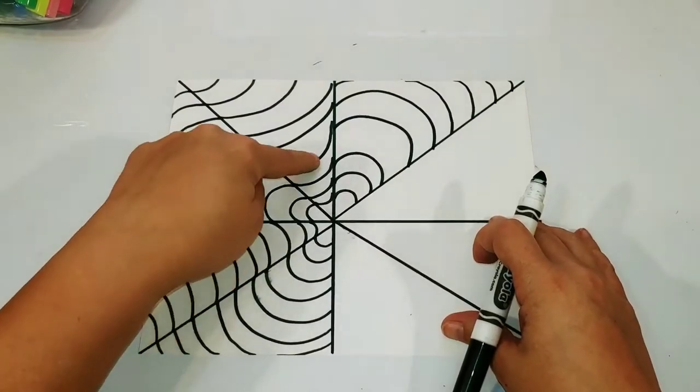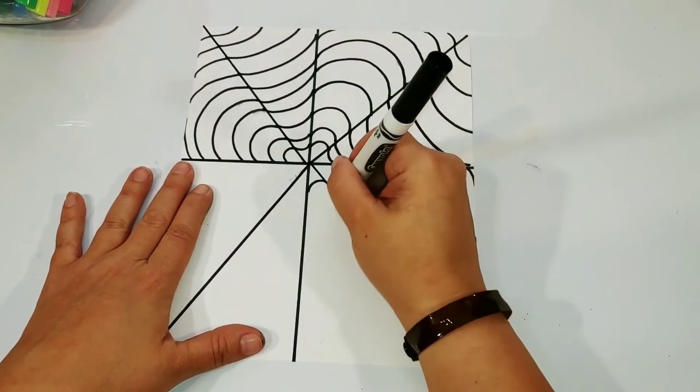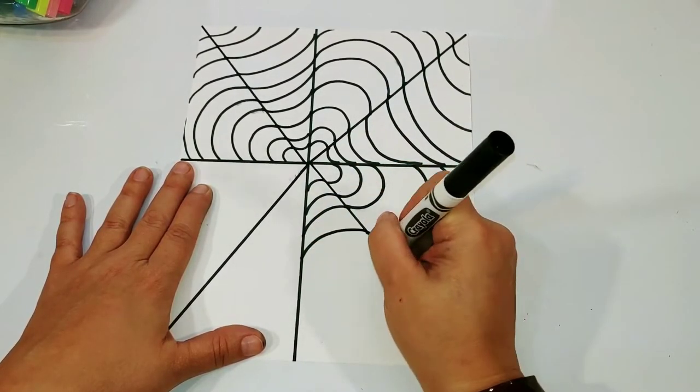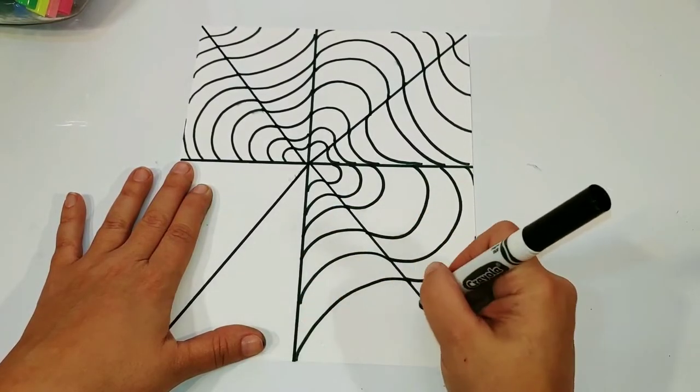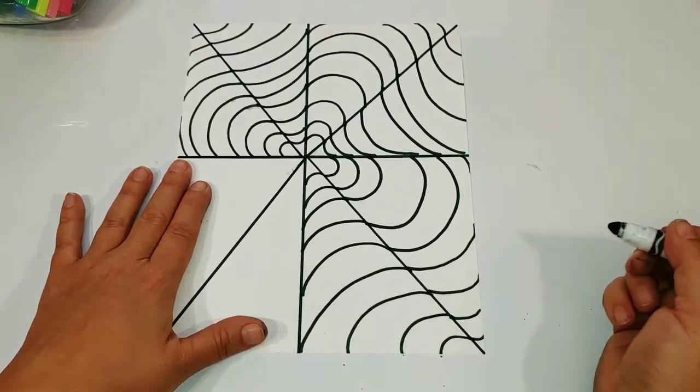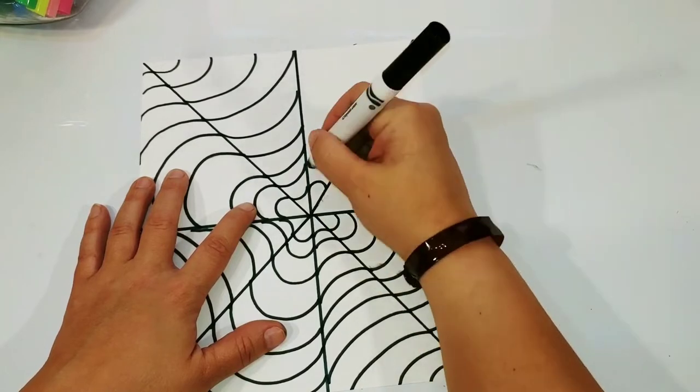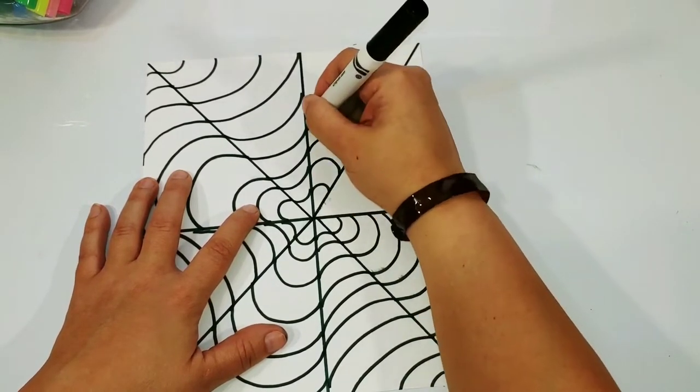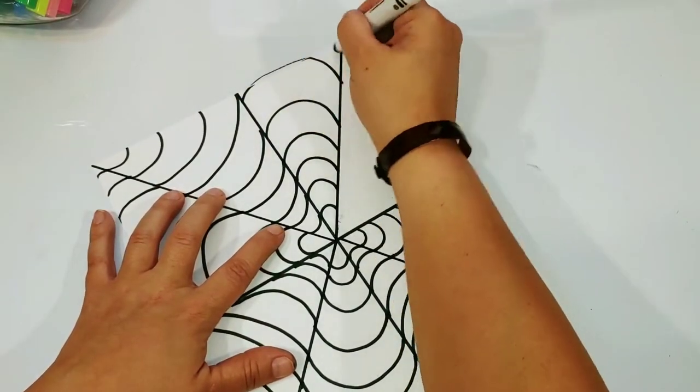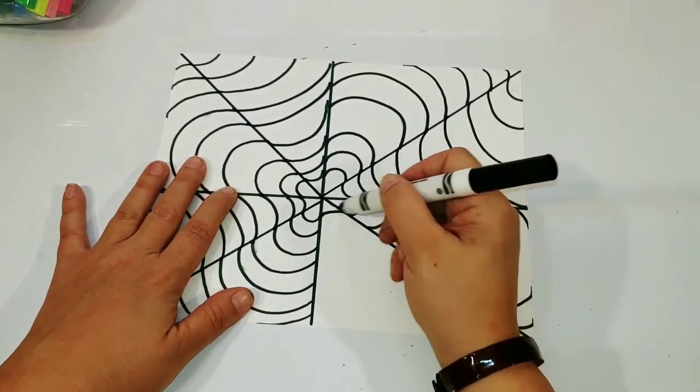There we go with the rainbow down, connecting that line to our new line, and then filling in the extra lines, upside down arc or upside down rainbow. So this is an alternating pattern, meaning we do one and then the other. So we're going to do a right side up rainbow and then an upside down.